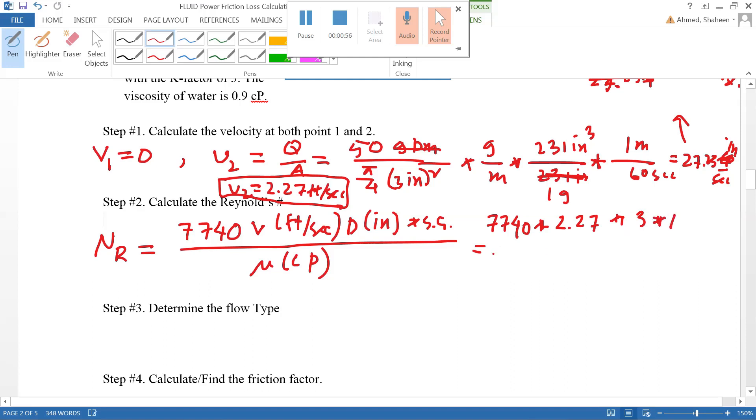The specific gravity for water is one, with respect to water that should be one. The absolute viscosity is 0.9. So the value for the Reynolds number I calculated is...